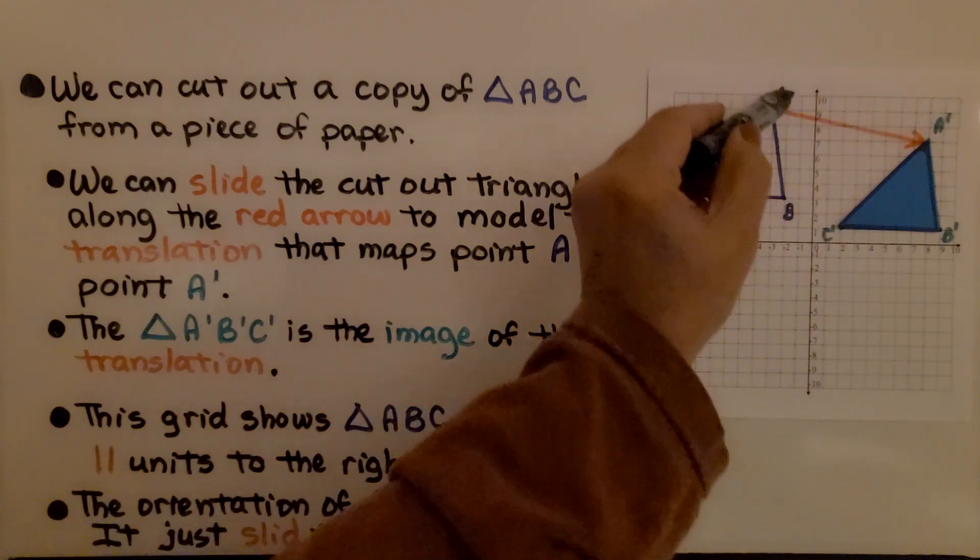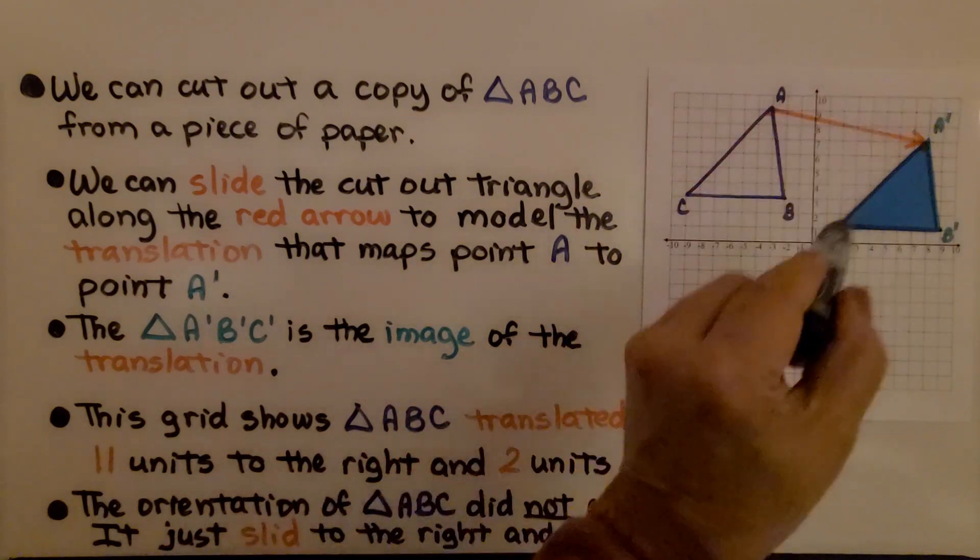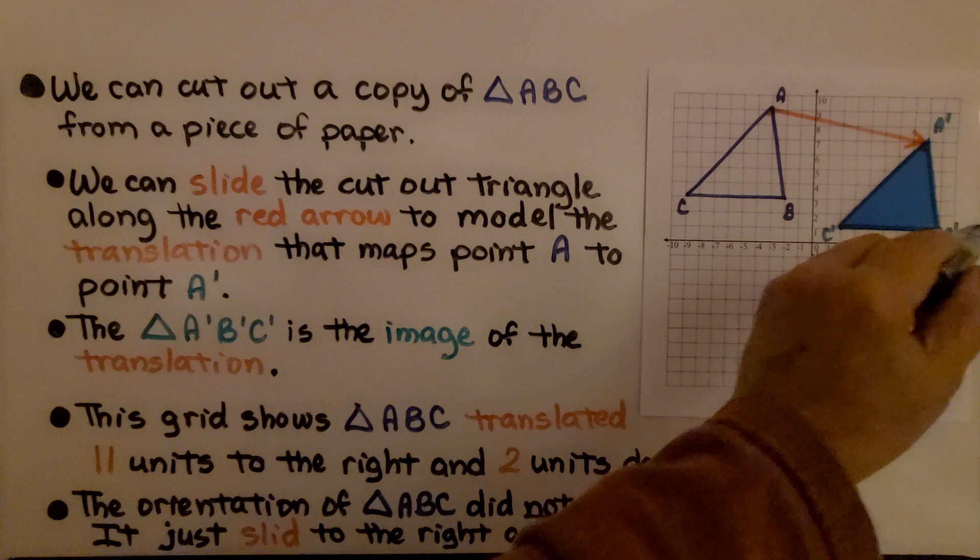So each point—A went 11 units to the right and 2 units down, B went 11 units to the right and 2 units down.